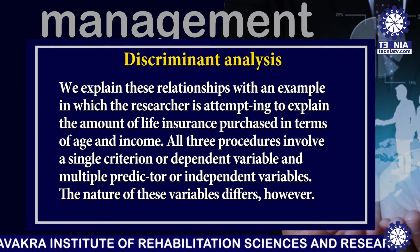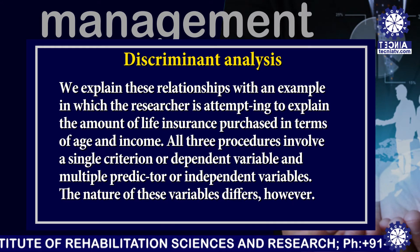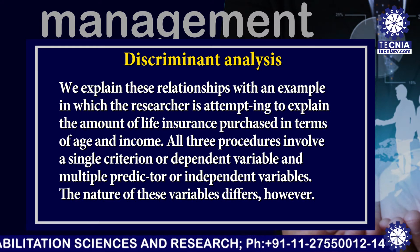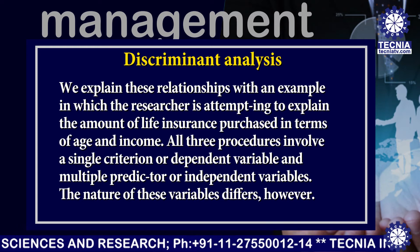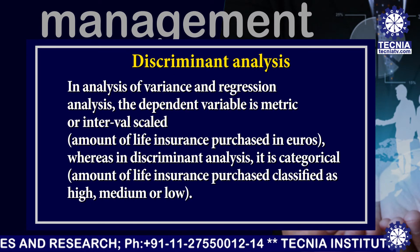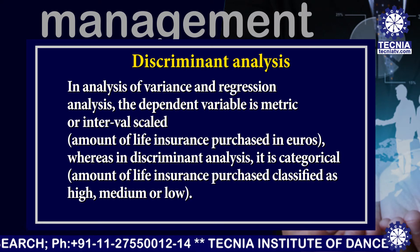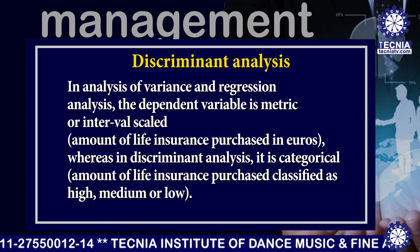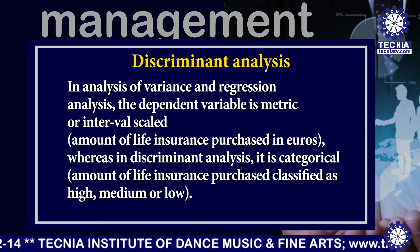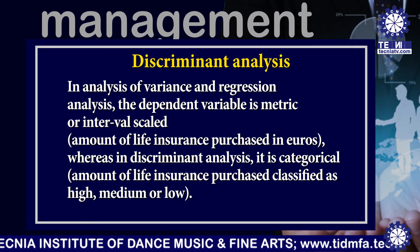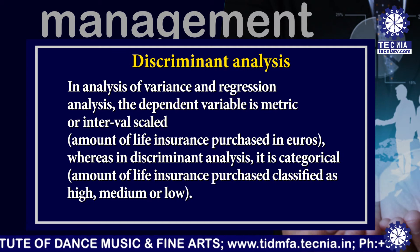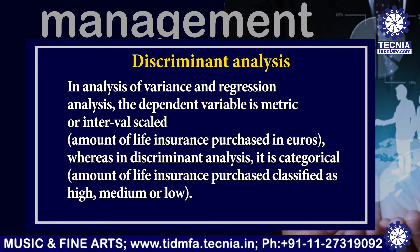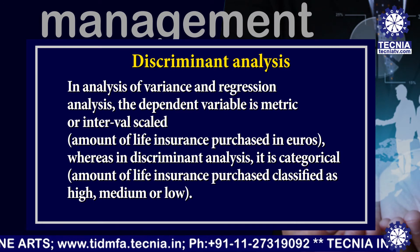All three procedures involve a single criteria or dependent variable and multiple predictor or independent variables. The nature of these variables differs, however. In analysis of variance and regression analysis, the dependent variable is metric or interval scale — here, the amount of life insurance purchased in rupees. Whereas in discriminant analysis, it is categorical — meaning the amount of life insurance purchased is classified as high, medium, or low.